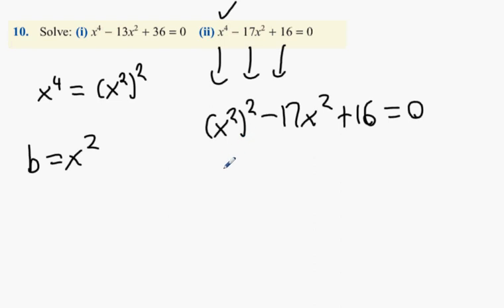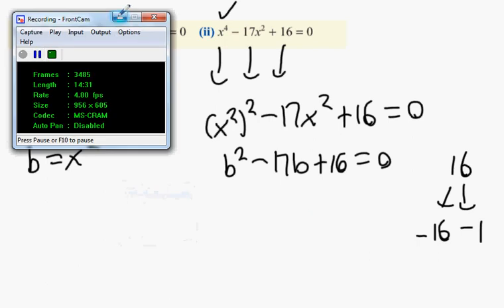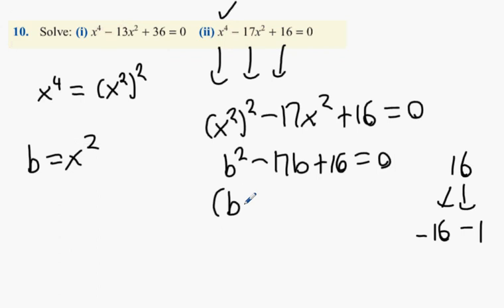B squared, yes. Minus 17B plus 16. And what happens next? What's the reference number? 16. What two numbers? So what we get is B minus 16, B minus 1 equals 0. Now this means that B is going to equal 16, and B is going to equal 1.